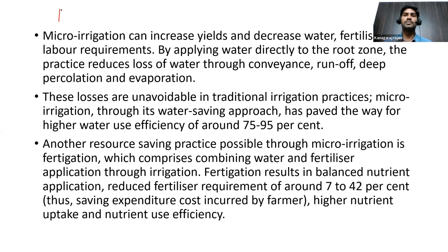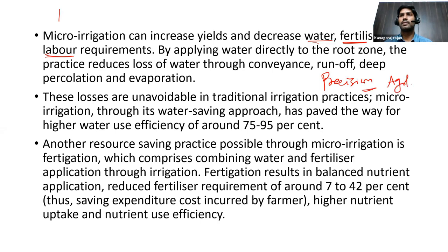Micro irrigation not only addresses the water crisis but also increases crop yield. It decreases water consumption, fertilizer use, and overall input requirements including labor. Micro irrigation is one of the precision agriculture techniques, where inputs are applied precisely where required. Soil testing and site-specific nutrient management are conducted, achieving maximum resource conservation through precision agriculture.